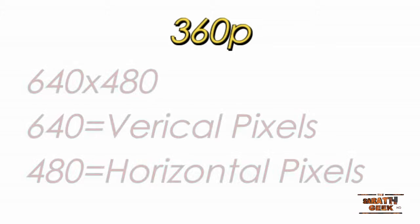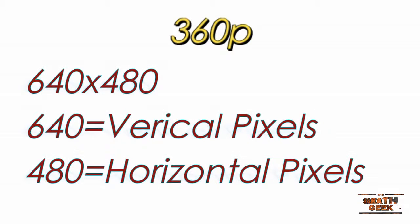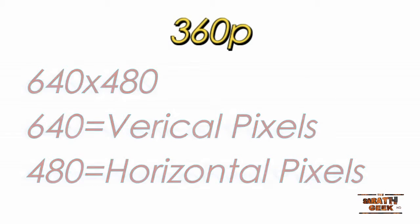Moving to the next resolution, 360p: 360p denotes 640 into 480, where 640 equals the vertical pixels and 480 equals the horizontal pixels. Next is 480p, which is 480 into 800. The larger number denotes the vertical and the smaller denotes the horizontal pixels.